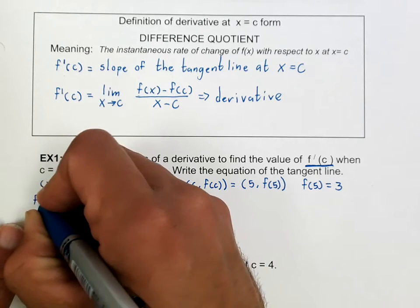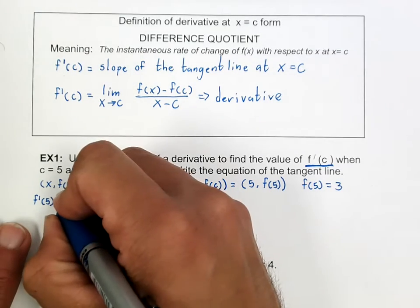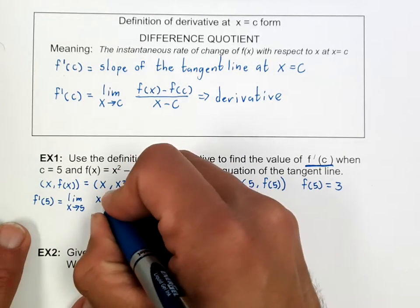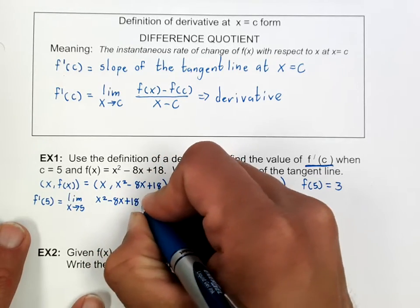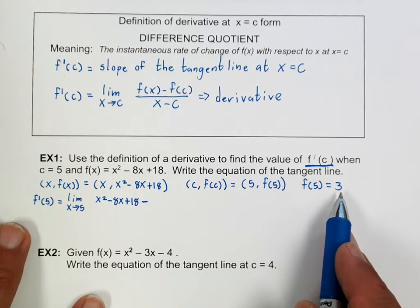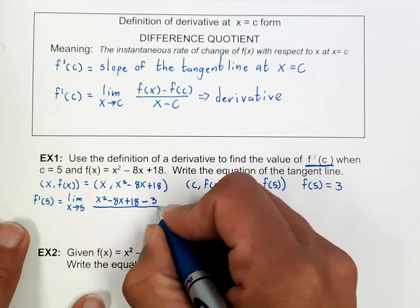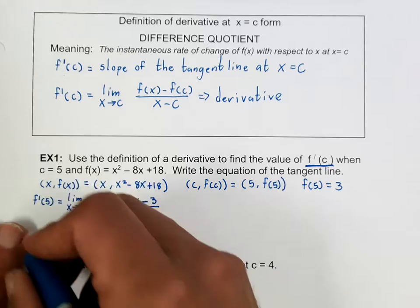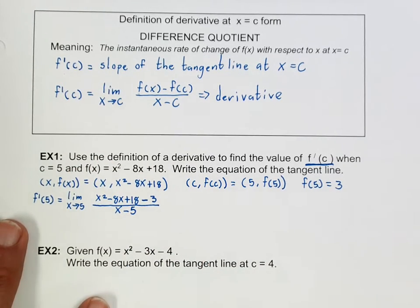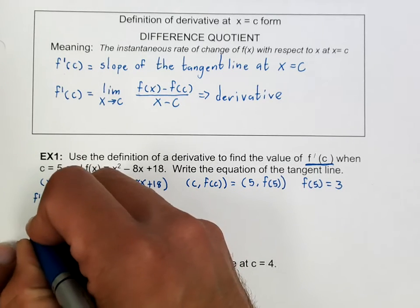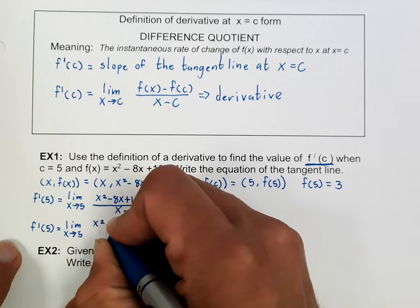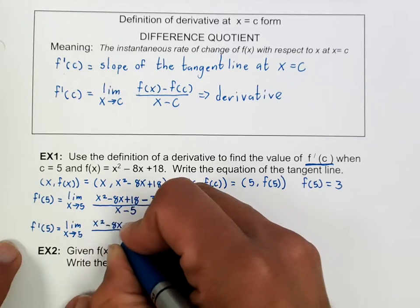So f prime of 5, the slope at 5, equals the limit as x approaches 5 of [x²-8x+18 minus 3] over x minus 5. That minus is coming from f(c) equals 3. So we have the limit as x approaches 5 of x²-8x+15 over x minus 5. At this point all I've done is add like terms, so now I'm going to factor.